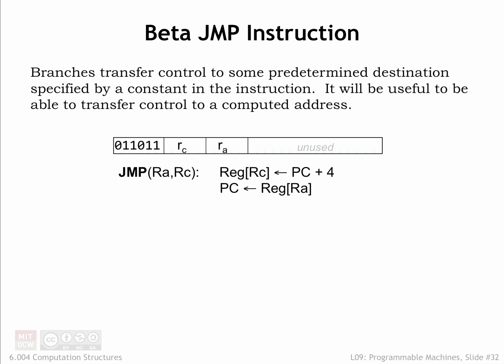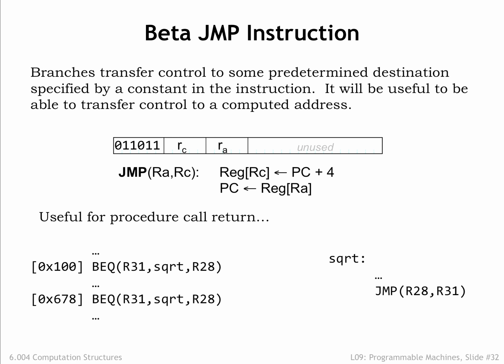Like branches, JUMP will write the PC plus 4 value into the specified destination register. This capability is very useful for implementing procedures in beta code.